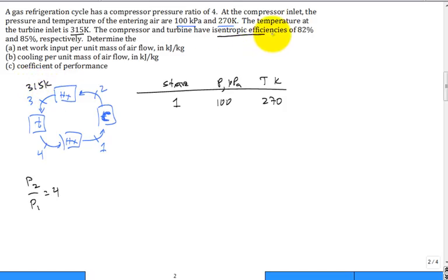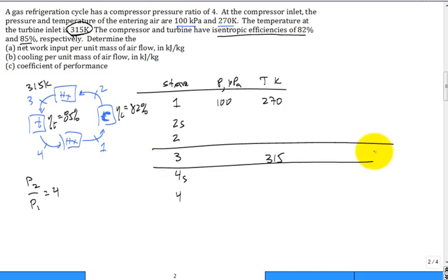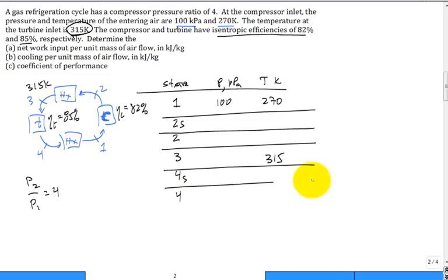The temperature at the turbine inlet is 315, so right over here it's 315 Kelvin. The isentropic efficiency of the compressor is 82%, and of the turbine is 85%. So when I compress, I'm going to go state 2S and 2 actual because I'm going to do that in two steps in my analysis. Then we'll go to state 3, then 4S, 4 actual. Now let's put in the temperature at the turbine inlet, 315 for state 3.